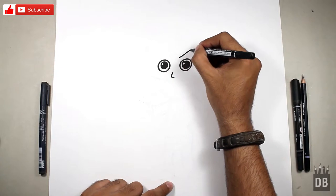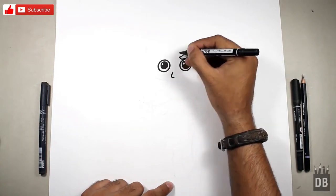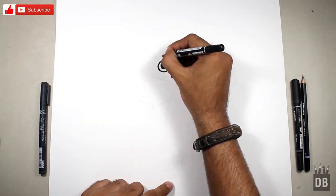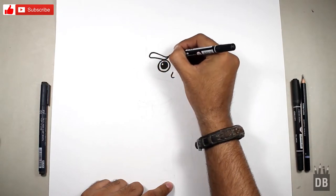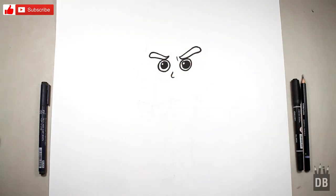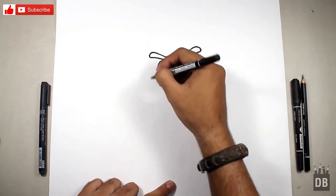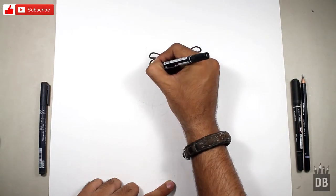You can see the eyebrows are ready. Now we have to make the mask because ninja is wearing a mask to hide their face.